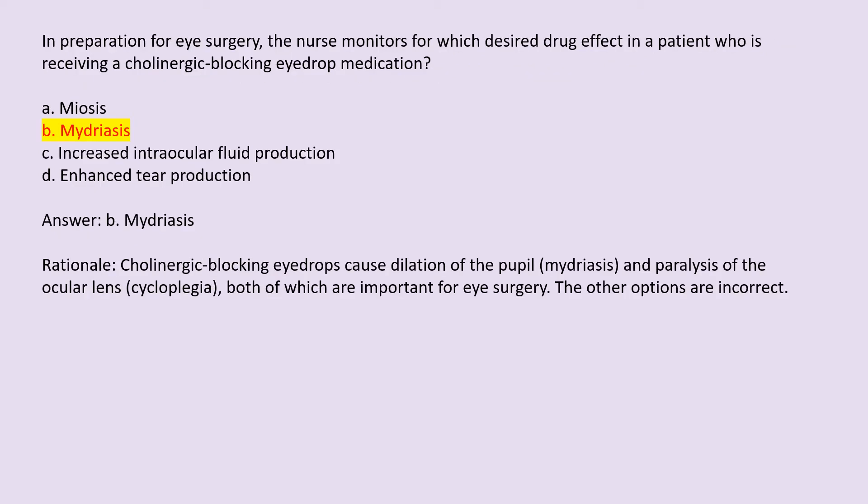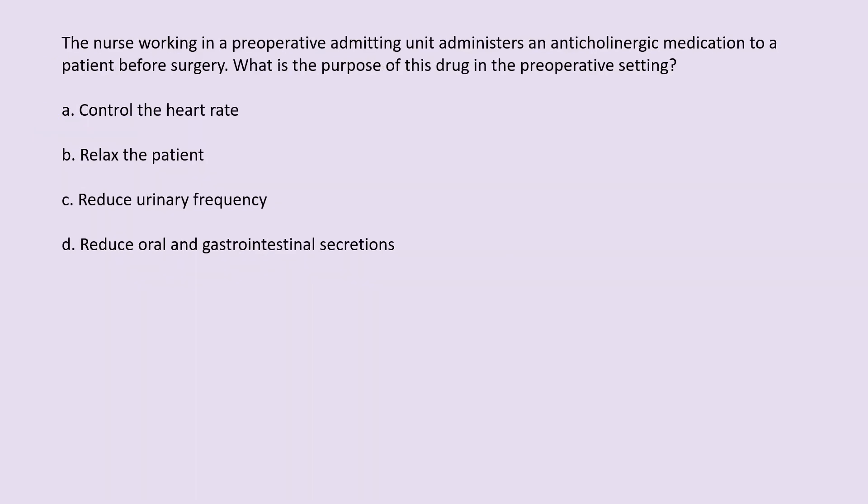Answer: B. Mydriasis. Rationale: Cholinergic-blocking eyedrops cause dilation of the pupil, mydriasis, and paralysis of the ocular lens, cycloplegia, both of which are important for eye surgery. The other options are incorrect.